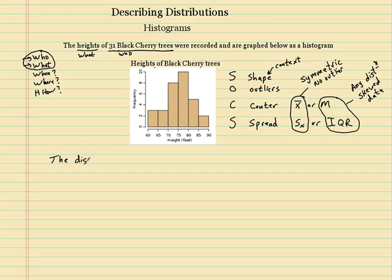The distribution of, what did we measure? The heights. The distribution of the heights of, what did we measure the heights of? Black cherry trees. The distribution of the heights of the 31 black cherry trees are. Take a look at this. If you looked at the shapes of the distribution of the other one, you should have a good idea of what this shape is. And this would be roughly symmetric.